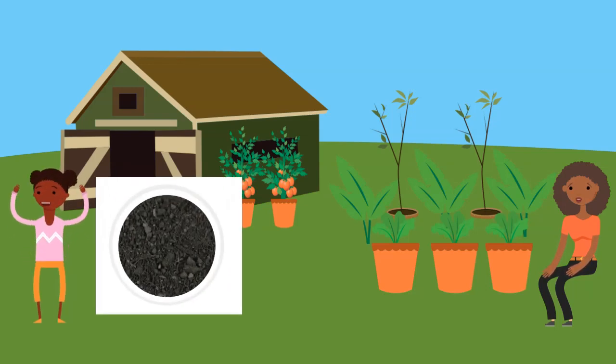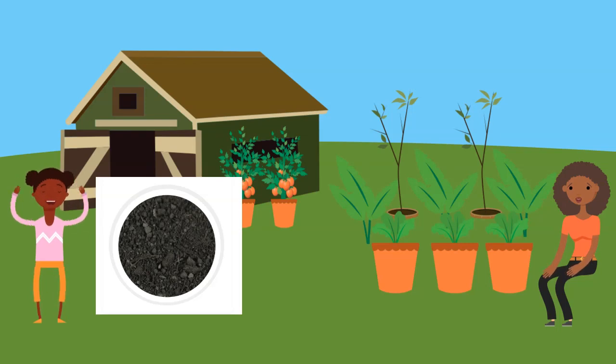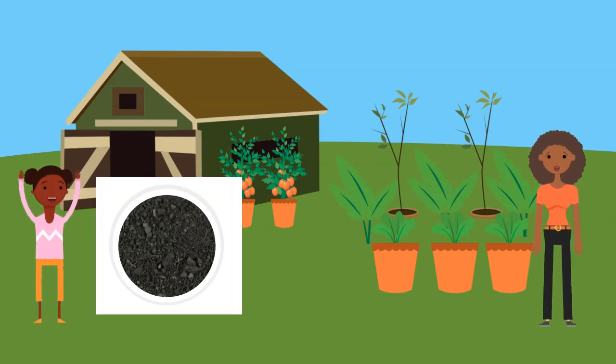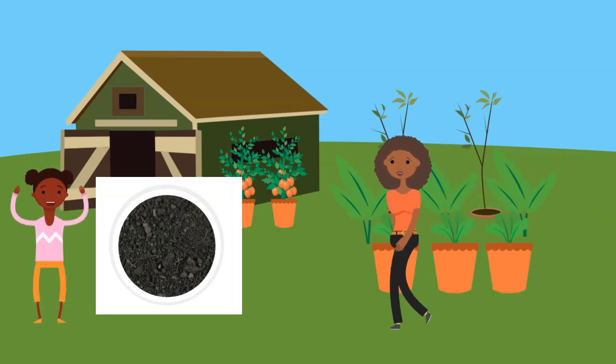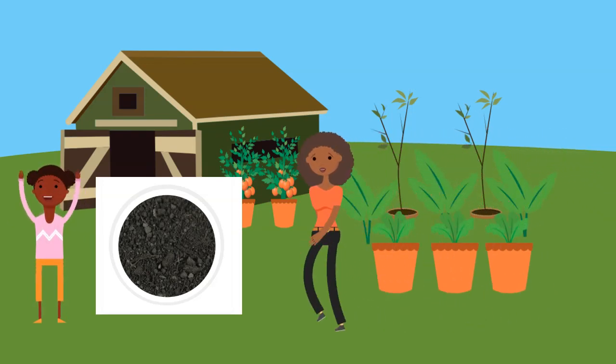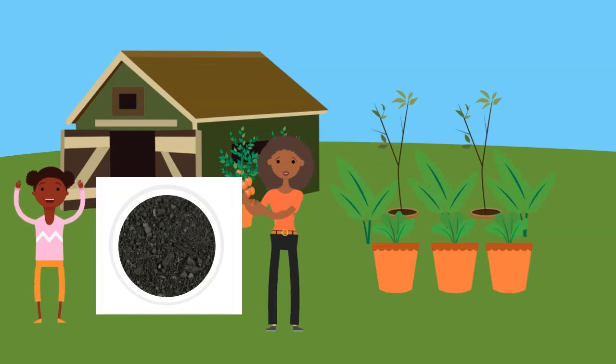Loam is the best kind of soil for a garden. It is dark in color and is a combination of sand, silt, and clay. It can hold water and nutrients to grow good plants.